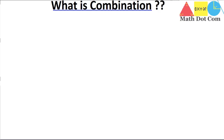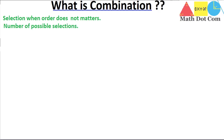First of all, let's see what is combination. Combination is basically a selection where order does not matter. So where we have to make the selection, order should not be considered. As in case of permutations, permutation is an arrangement where order does matter, but in combination it is not. So you can also say that combination is the number of possible selections.